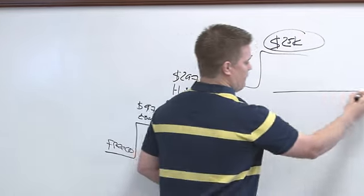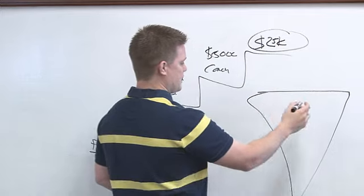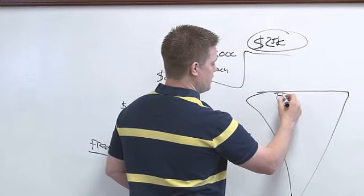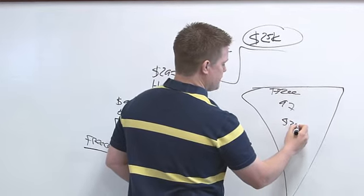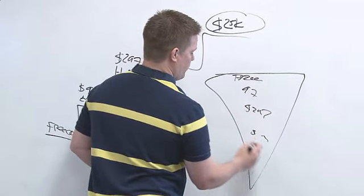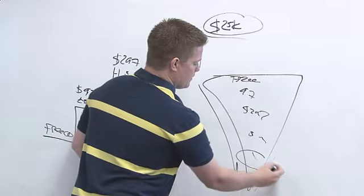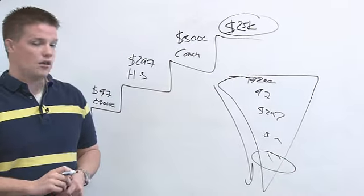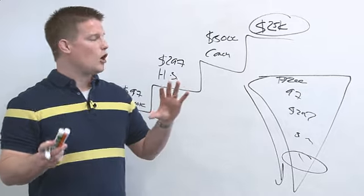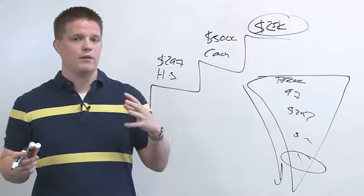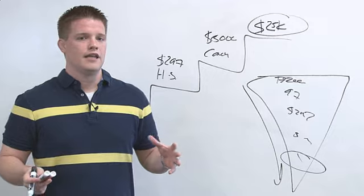And if you look at like a funnel like this, this is how it's going to happen. Up here is going to be your free thing, and then down here is going to be your $97 thing and your $297 and so on and so forth all the way down. And so less people will keep taking it all the way down, but there's going to be people that take it every step along the way.